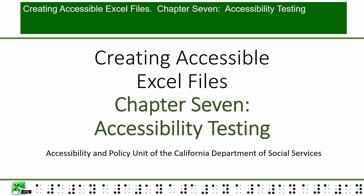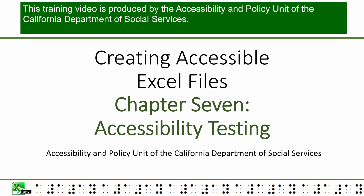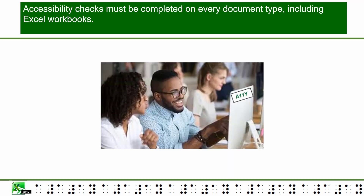Creating Accessible Excel Files, Chapter 7: Accessibility Testing. This training video is produced by the Accessibility and Policy Unit of the California Department of Social Services. Accessibility checks must be completed on every document type, including Excel workbooks.